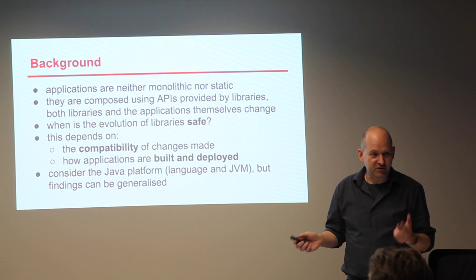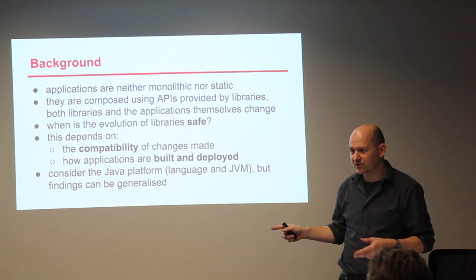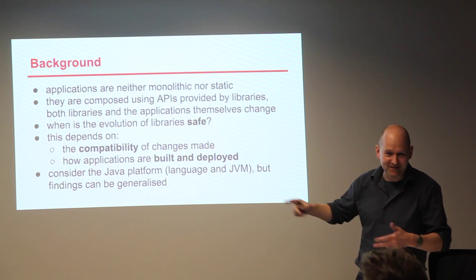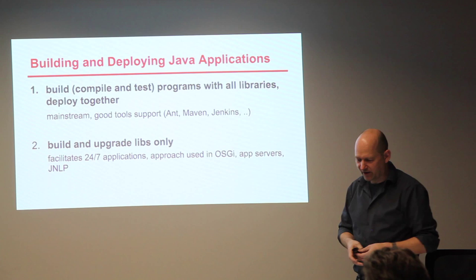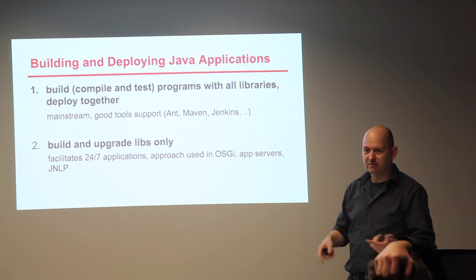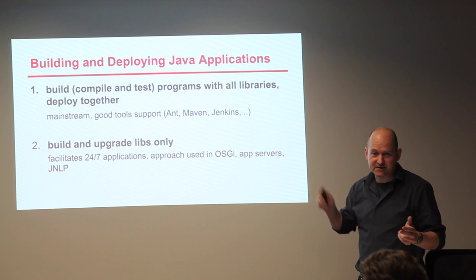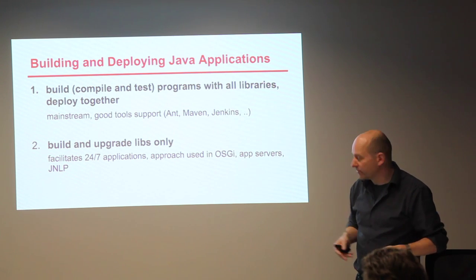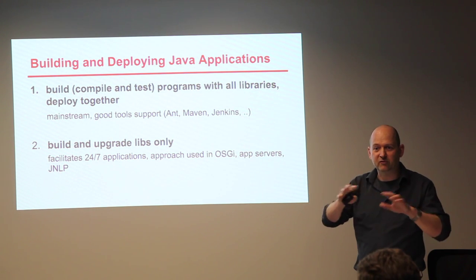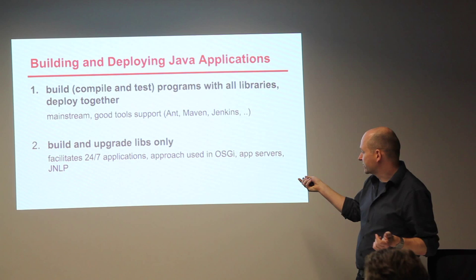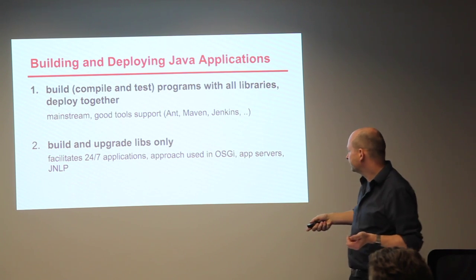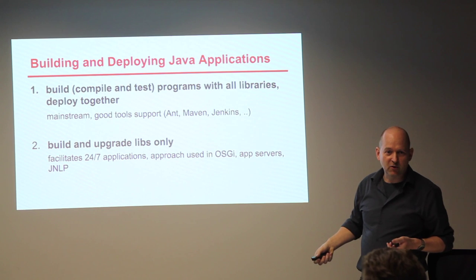There are actually two ways to do this for Java — I restrict myself to Java, though most of these issues can be observed on other platforms; I have a student doing the same kind of thing on C# and .NET with similar issues. First, we build, compile, and test programs with all libraries and deploy them together — with tools like Ant, Maven, Gradle, Jenkins, Hudson. But there's a different way: you only build and upgrade the libraries without big integration builds, used by OSGI, Webstart/JNLP, and some application servers.